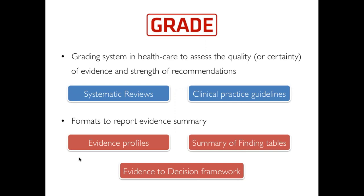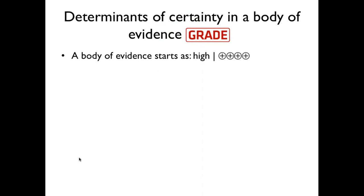In the GRADE approach, as you know, randomized controlled trials (RCTs) start with high quality evidence, and observational studies have low quality evidence supporting estimates of intervention effects. Five factors may lead to rating down the certainty of evidence, and three determinants may lead to rating up.